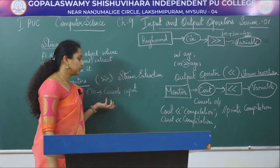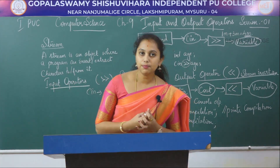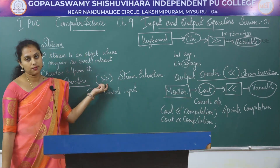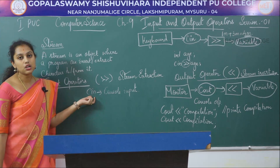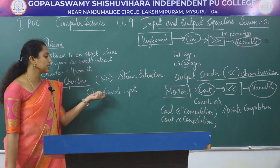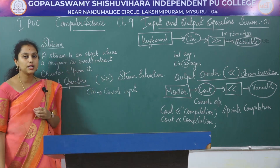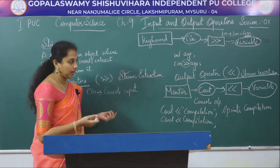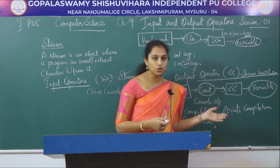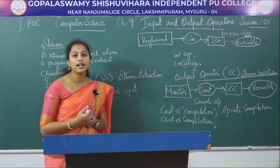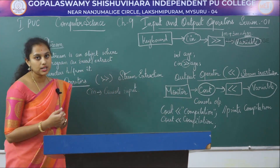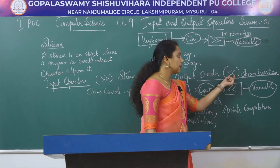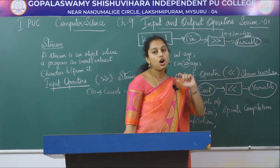In summary, the input operator accepts data from the user using the stream extraction operator with the cin object, which stands for console input, from the standard input device. The output operator displays data on the standard output device using cout, which stands for console output, with the stream insertion operator.